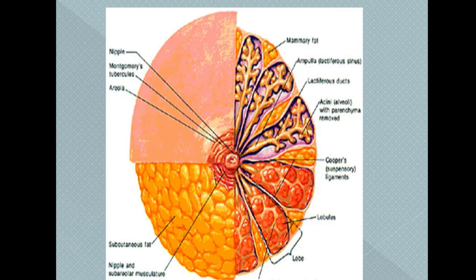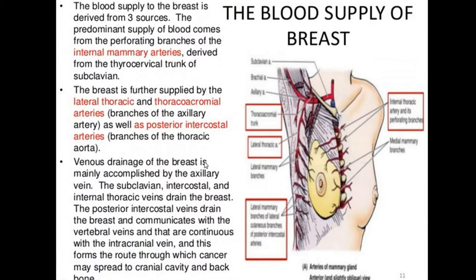The septa divide the breast tissue into multiple lobules, drained by the lactiferous duct into the lactiferous sinus, opening through multiple separate openings through the nipple. The nipple is covered by highly pigmented areolar tissue.